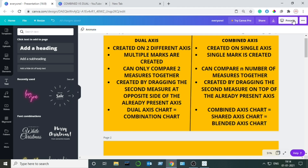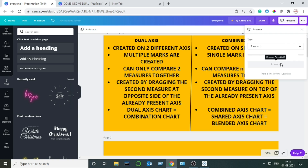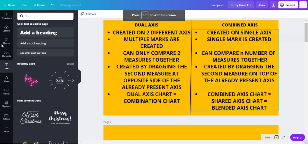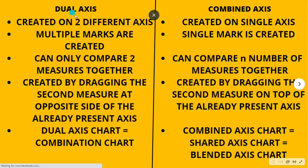Now I will show a summary slide with all the differences I just told you — you can take a screenshot for easy revision. Dual axis chart is created on two different axes; combined axis chart is created on a single axis. Multiple marks are created in dual axis; a single mark is created in combined axis. Dual axis can only compare two measures together, but combined axis can compare any number of measures. Dual axis is created by dragging the second measure to the opposite side of the already present axis; combined axis is created by dragging the second measure on top of the already present axis.